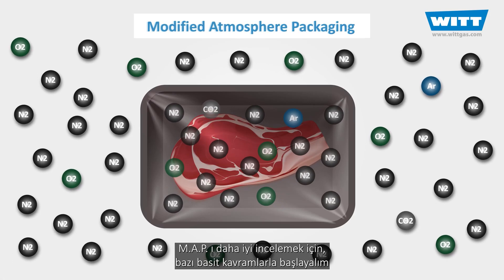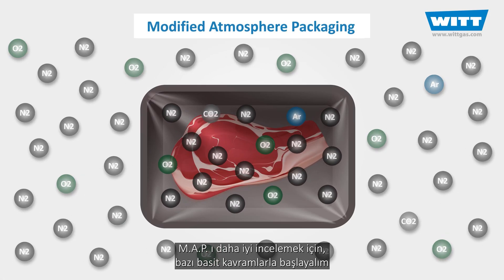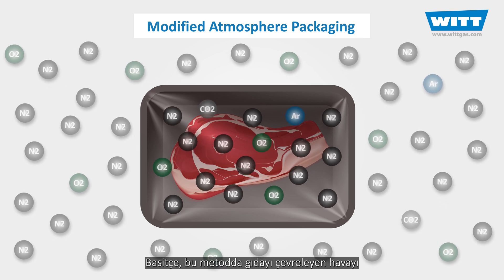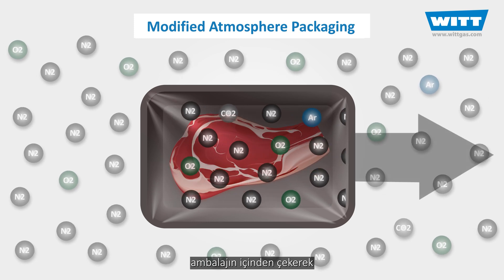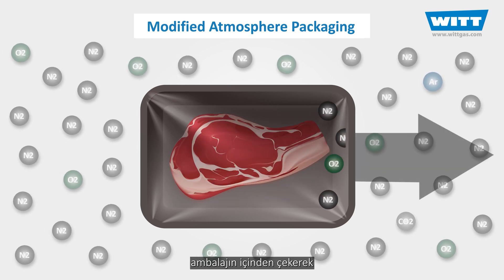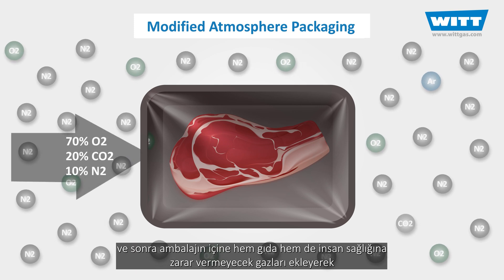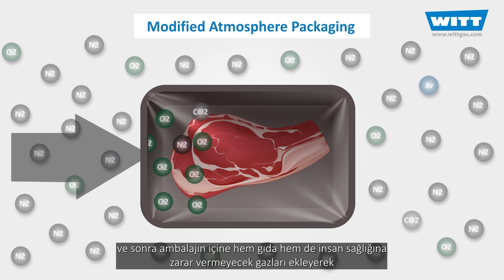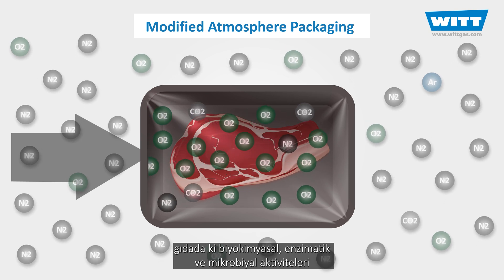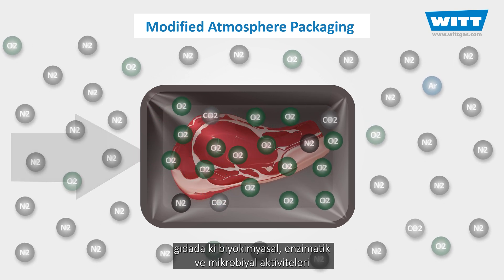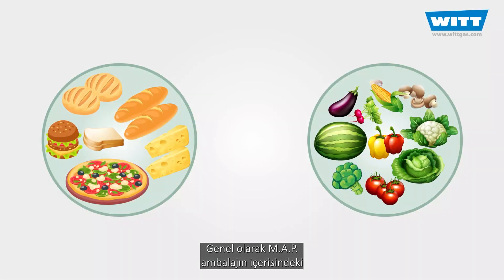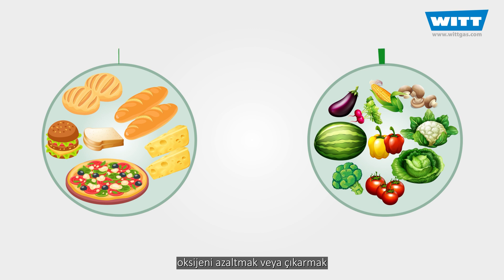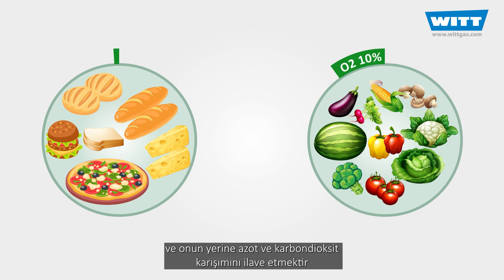So to figure out what MAP exactly is, let's start with the basic concepts. Simply put, in this method we modify the atmosphere surrounding a food product by removing the air inside of its package and then adding gases that are safe for both food and customer health, to control the biochemical, enzymatic, and microbial actions without temperature or chemical treatments. In most cases MAP is aimed at eliminating or reducing oxygen inside the packaging and replacing it with a mixture of carbon dioxide and nitrogen.